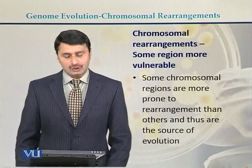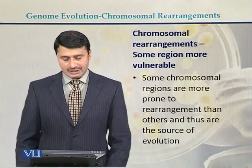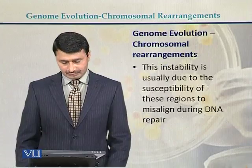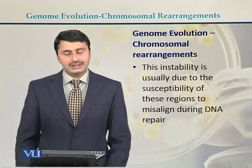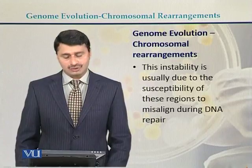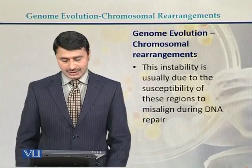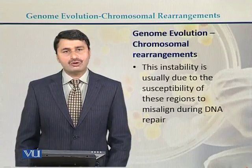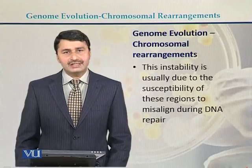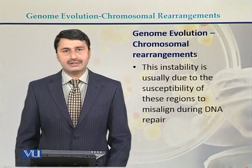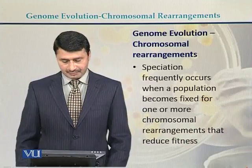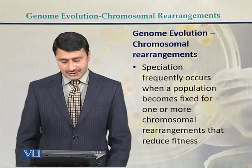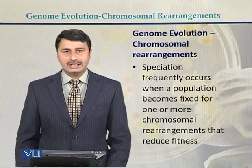Some regions of the genome are more prone to rearrangements than others, and thus they are a source of evolution. This instability is usually due to the susceptibility of these regions to misalign during DNA repair — meaning those regions are more susceptible to being misaligned when there is a repair mechanism in the case of DNA. Speciation frequently occurs when a population becomes fixed for one or more chromosomal rearrangements.